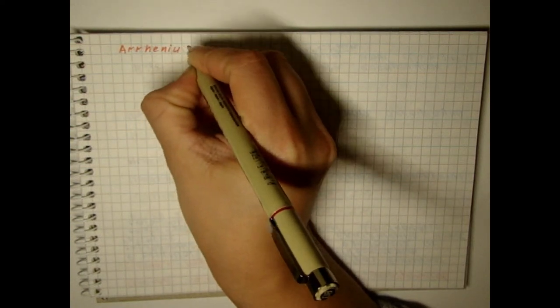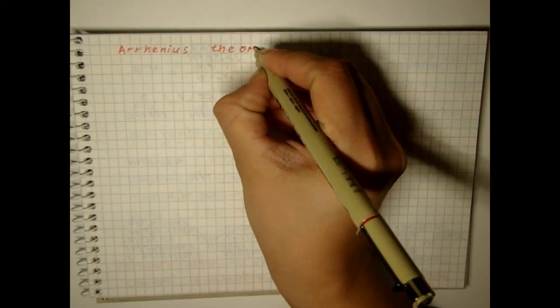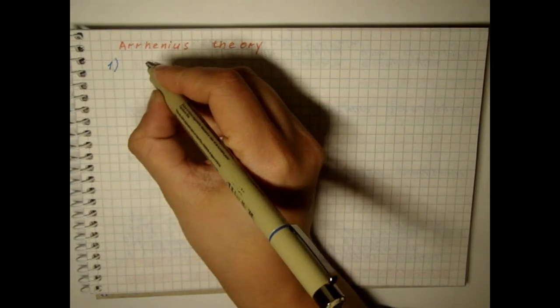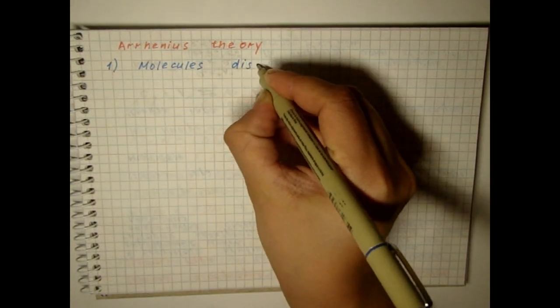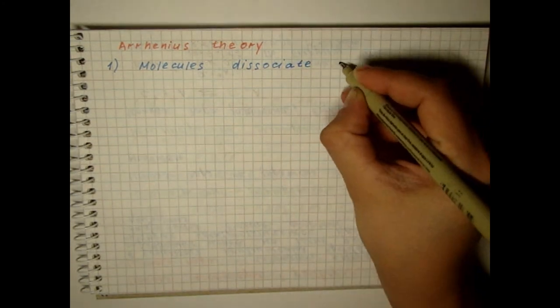Today we will study the theory of Arrhenius. It consists of the following key points. Molecules of inorganic and organic acids, bases and salts dissociate into ions upon dissolution.